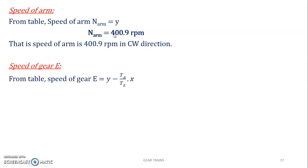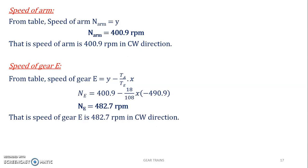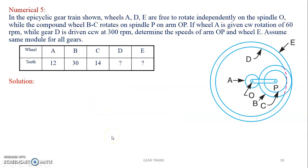For the speed of gear E, again from the table, substitute the expression for NE and get the speed of E as 482.7 RPM clockwise, because the result is positive. If the result were negative, it would be counterclockwise.